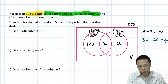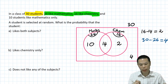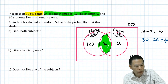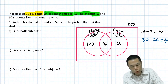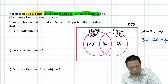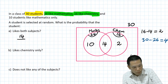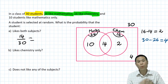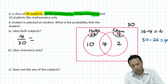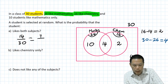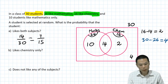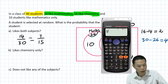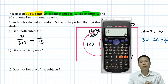Part A: what is the probability that the student likes both subjects — in other words, both Maths and Chemistry? That's the intersection region, which is 14 students. So the probability is 14 out of 30. We can simplify by dividing both by 2, so 14 divided by 2 is 7 and 30 divided by 2 is 15. The answer is 7 over 15.